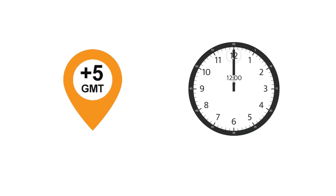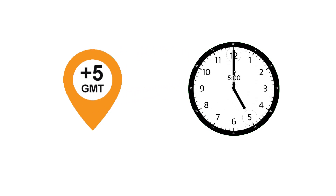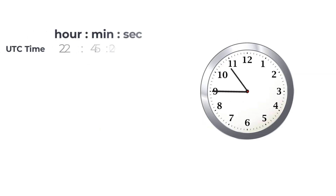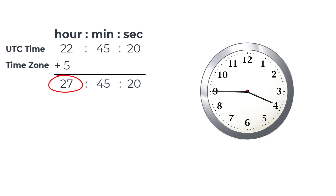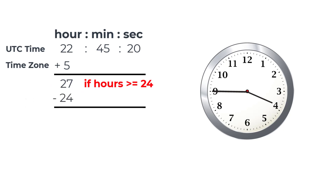A country in the GMT plus 5 time zone is 5 hours ahead of UTC time. For example, here is the UTC time, and if we add 5 hours to it, we get the local time for the country. But this may not be a valid time because the hours could be 24 or more. Since there are only 24 hours in one day, if the hours are 24 or more, we subtract 24 from the hours. So the calculated time of 3 hours and 45 minutes becomes the correct local time.